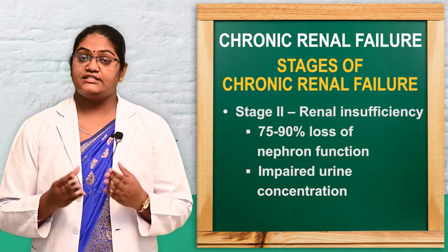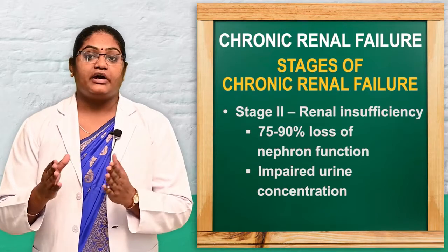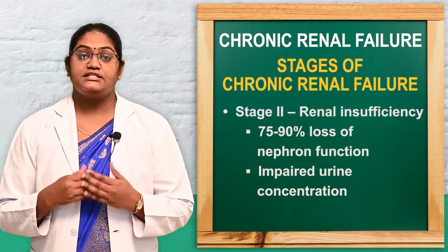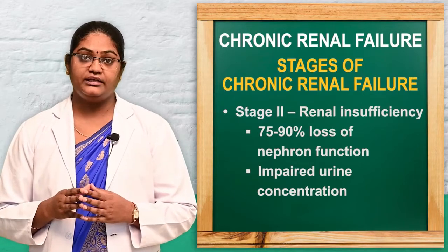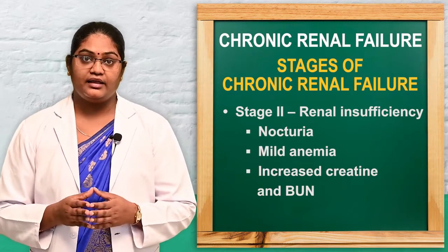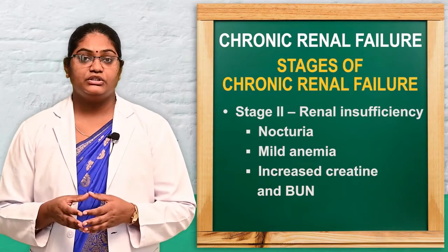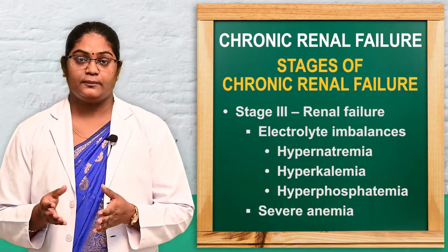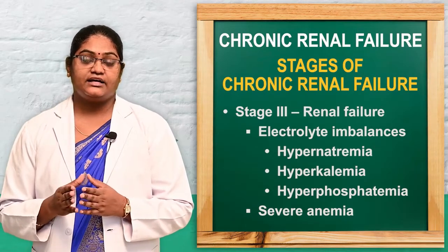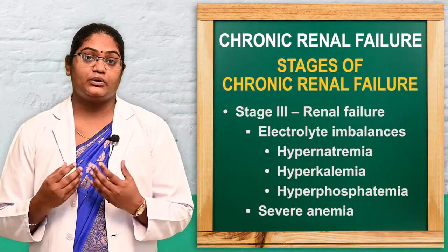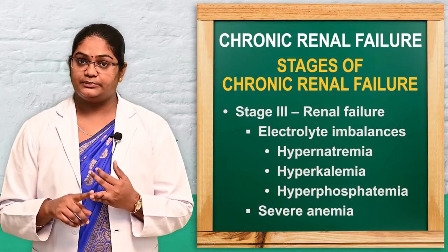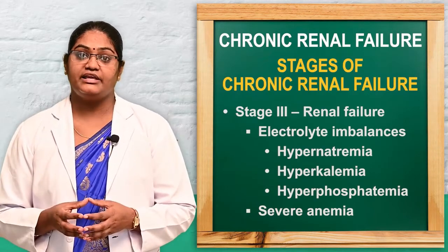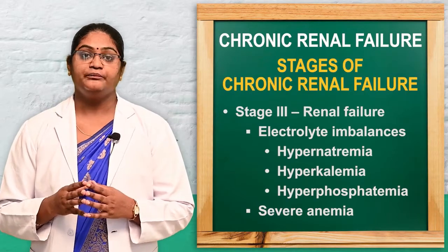The second stage is renal insufficiency, where 75 to 90 percent of nephron function is lost and symptoms develop — such as impaired concentration of urine, mild anemia, nocturia, and increased serum creatinine and BUN. The third stage is renal failure, where more symptoms develop such as electrolyte imbalances — hypernatremia, hyperphosphatemia, hyperkalemia — increased nocturia, and severe anemia.